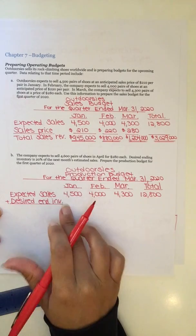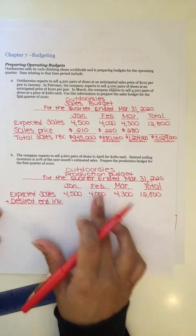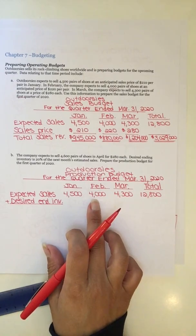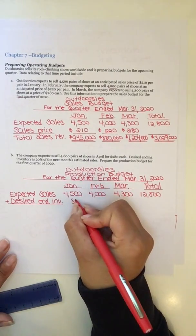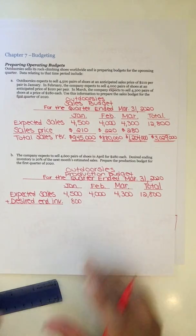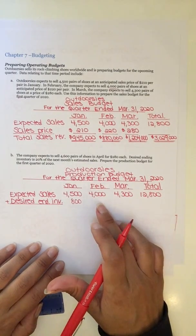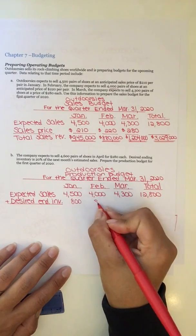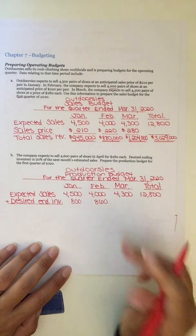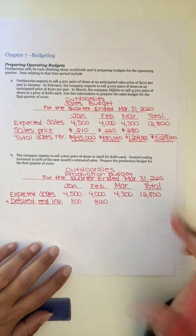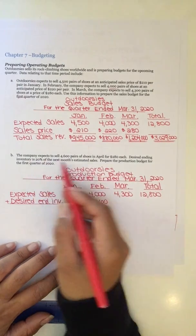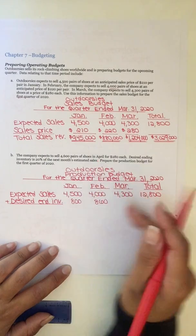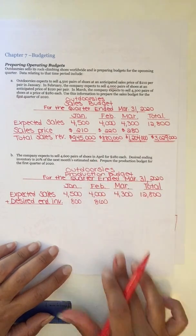Desired ending inventory is 20% of the next month's estimated sales units. Okay, so we're going to have to calculate it. So we want to end January with 20% of the next month's sales. So take 20% of 4,000 you'll get 800. Okay, so that's how we do that. For February, take 20% of March. You're going to get 860. For March, what do we do?